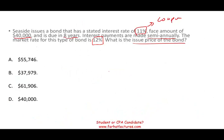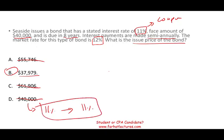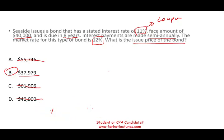So immediately you know it's a discount bond. You can actually answer this question without performing any computation. $61,000 is a premium, $55,000 is a premium — so the answer is $37,979. If you've got a question like this, it would take you literally a second. But I'm going to perform the computation to show you that the answer is $37,979. The bond would sell at $40,000 if the coupon and market rates are equal to each other.